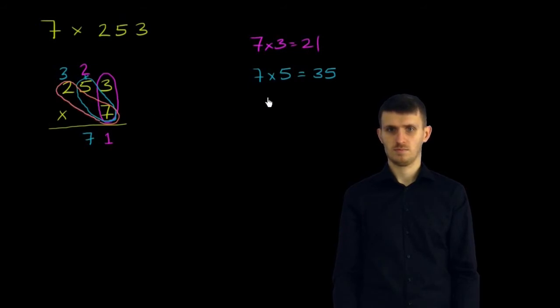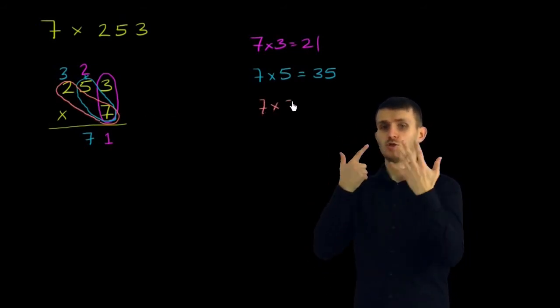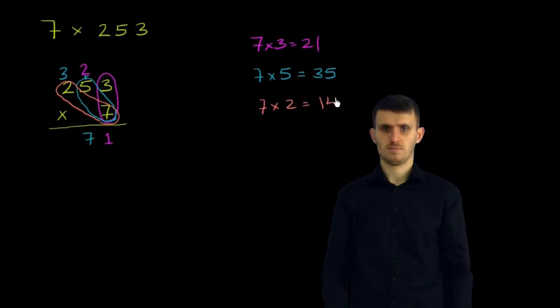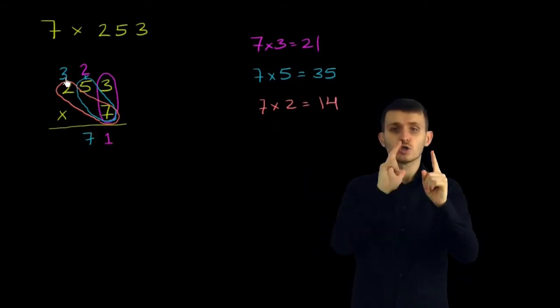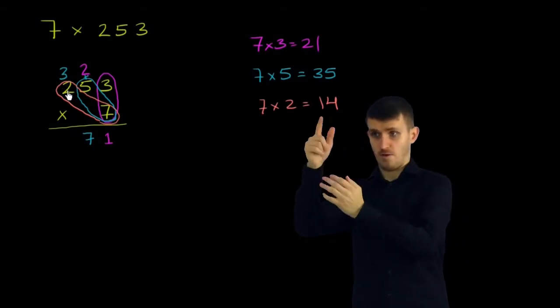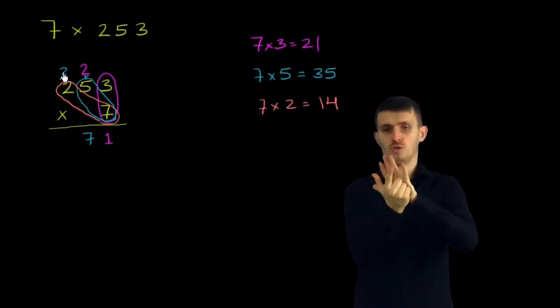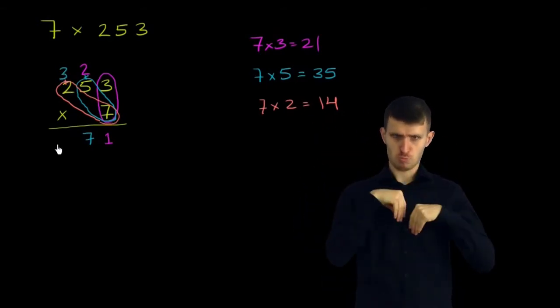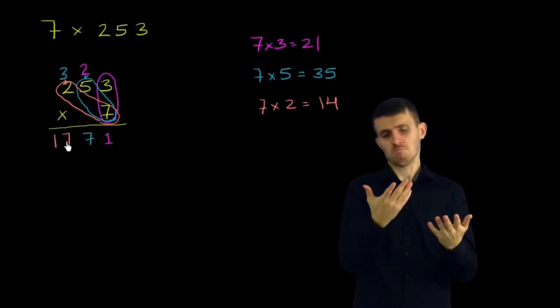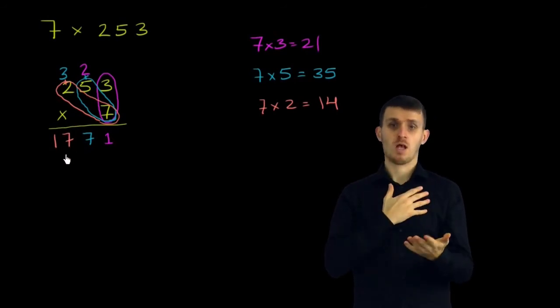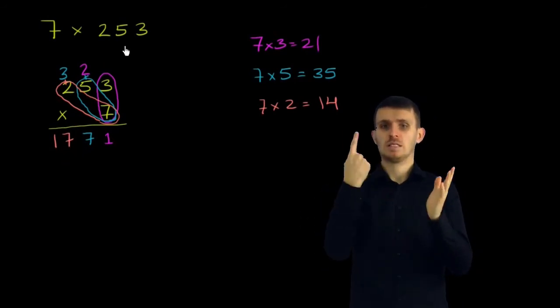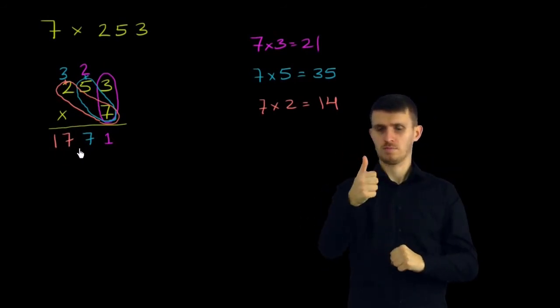Now we need to compute what 7 times 2 is. We know that 7 times 2 is 14 from our multiplication tables. We can't just put a 14 down here. We have this 3 to add. So 7 times 2 is 14, plus 3 is 17. So now we can write the 17 down here because 2 is the last number that we have to deal with. And so we have our answer.